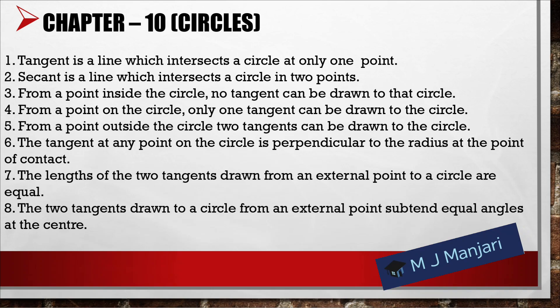Next we have Chapter number 10: Circle. First, a tangent is a line which intersects a circle at only one point. Second, a secant is a line which intersects a circle in two points. Third, from a point inside the circle no tangent can be drawn. Fourth, from a point on the circle only one tangent can be drawn. Fifth, from a point outside the circle two tangents can be drawn. Sixth, the tangent at any point on the circle is perpendicular to the radius at the point of contact. Seventh, the lengths of two tangents drawn from an external point to a circle are equal.